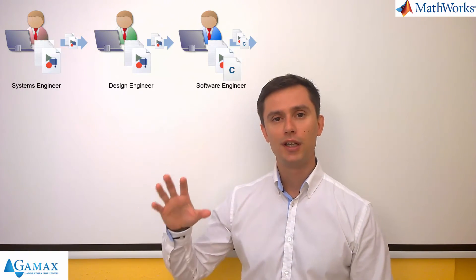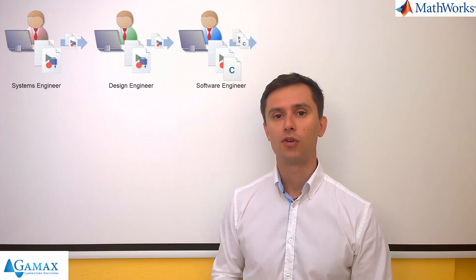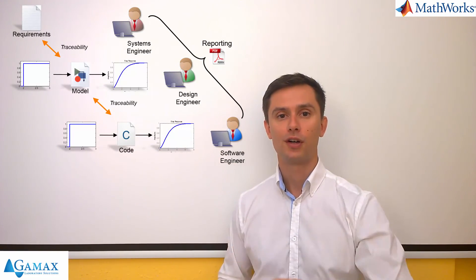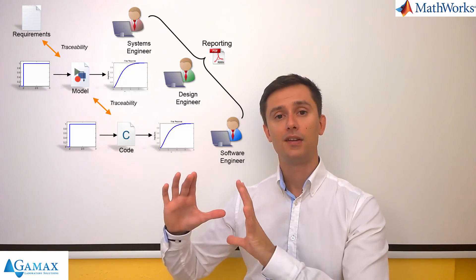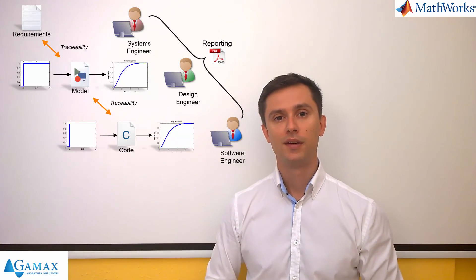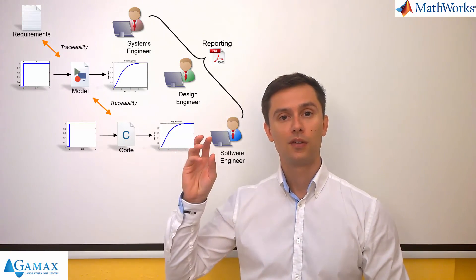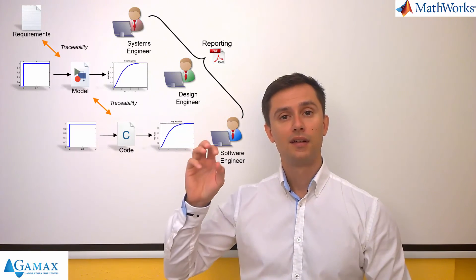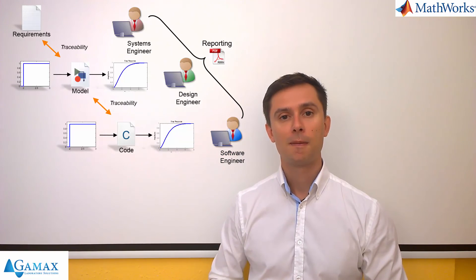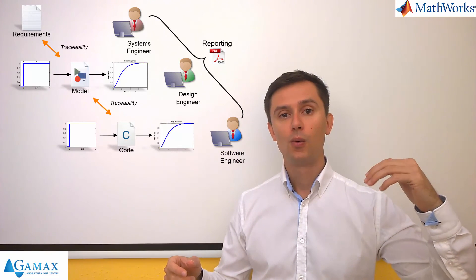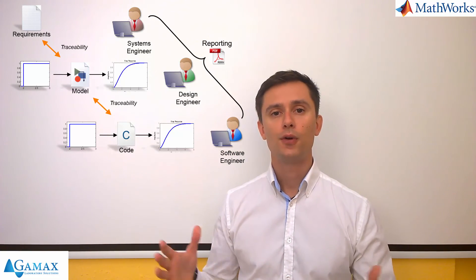And the last step is usually code generation from this model. The huge advantage of this approach is that because we started from a model which was linked to requirements, and we developed that model further, and at the end generated code from it, we have perfect consistency. So the final code is consistent with our model, and the model is consistent with the requirements. We also have perfect traceability — for each line of code we can find out which requirements it is linked to.